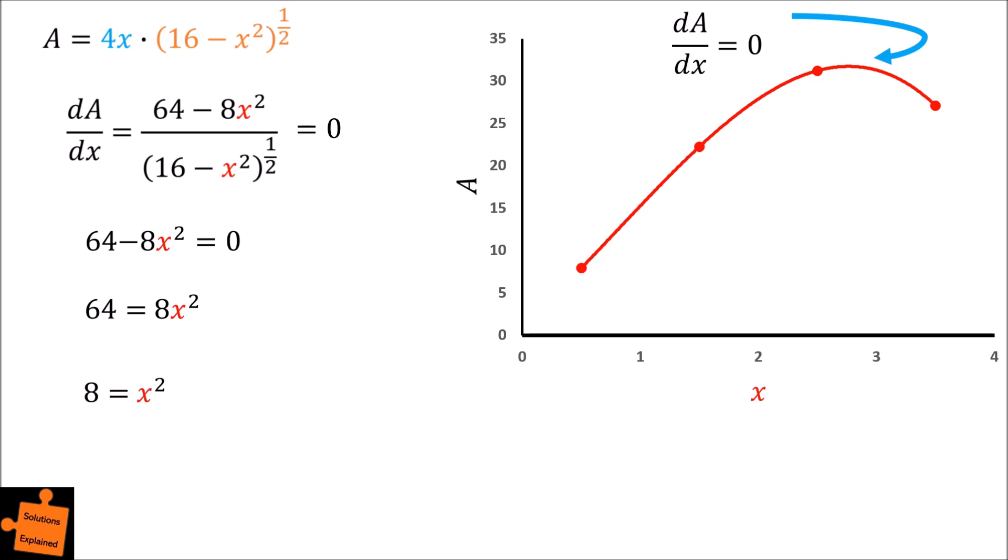Finally, take the square root to find that x is actually equal to 2 root 2, which is approximately 2.83 and is shown on our graph here on the right. This is the value of x which results in the maximum area.